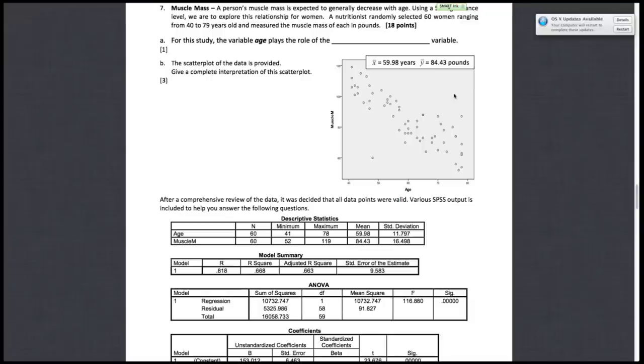Okay, so this is question number seven in fall 2011, the final exam for that year. We're told that a person's muscle mass is expected to generally decrease with age. In other words, as age increases, we expect that muscle mass will decrease. Using a 5% significance level, we're going to explore this relationship for women. We have 60 women, that's my sample size, and they range from 40 to 79 years old. We're going to measure their muscle mass. For this study, the variable age is doing what?